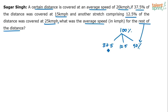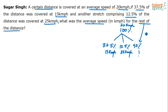37.5 and 12.5 is 50, so another 50% remains. The first stretch was covered at 15 kilometers per hour, the 12.5% stretch at 25 kilometers per hour, and you have to find the average speed for the remaining 50% distance. Overall, 100% of the distance was covered at 20 kmph average speed — 37.5% at 15, 12.5% at 25, and what was the speed for the rest?